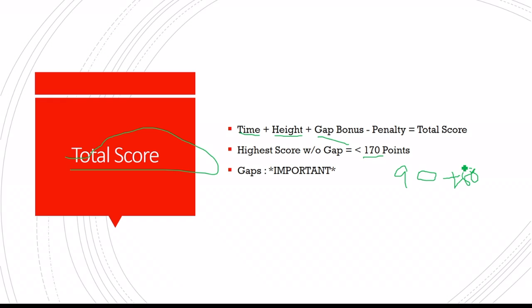And 90 because the highest time they can give you is 45 seconds and 2 points for every second. So that's 90. So 170. And therefore, gaps are very important. And I forgot minus penalty, whatever penalty you get.